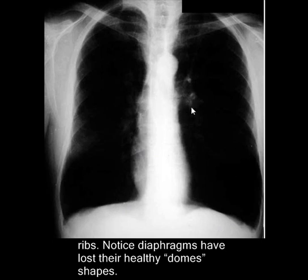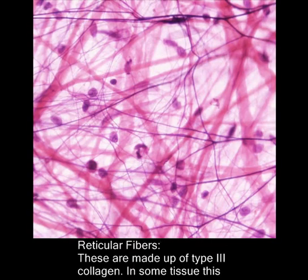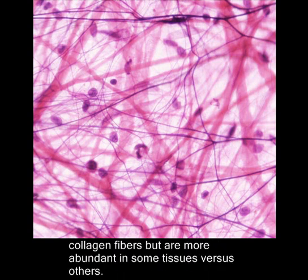Such conditions are thought to be a result of loss of elastic fibers. There is another type of fiber known as reticular fiber, and these are also made up of type 3 collagen. Unfortunately, we don't have a good example here, but in some tissues this fiber is made by special cells known as reticular cells. It is very similar in function to collagen fibers but is more abundant in some tissues than others.